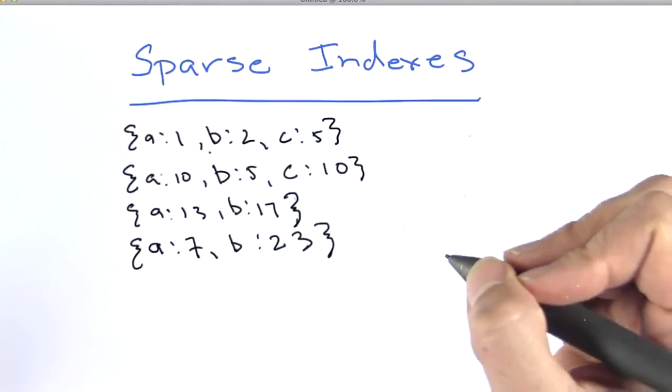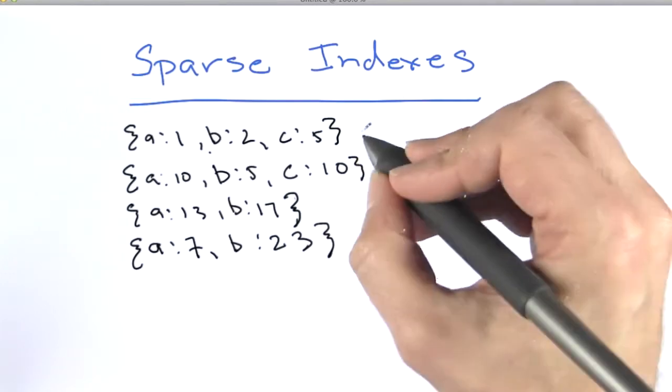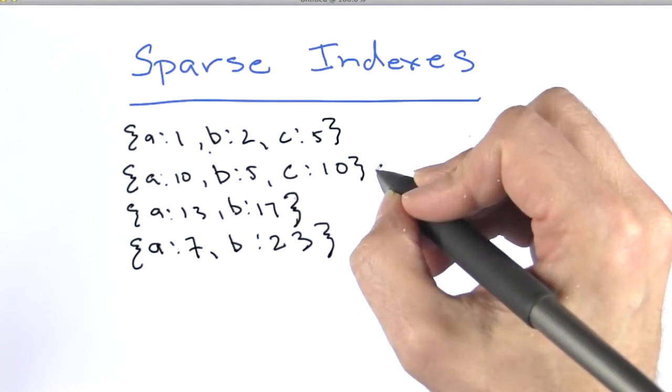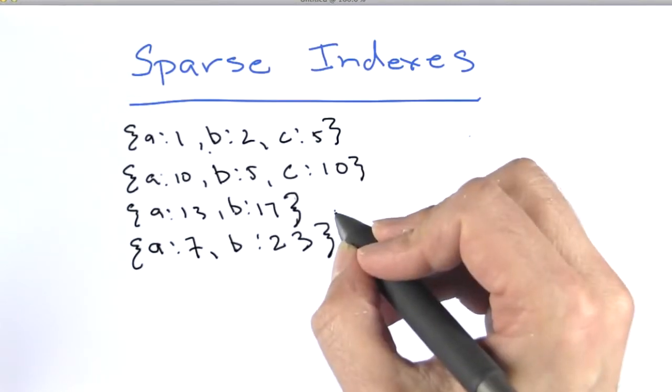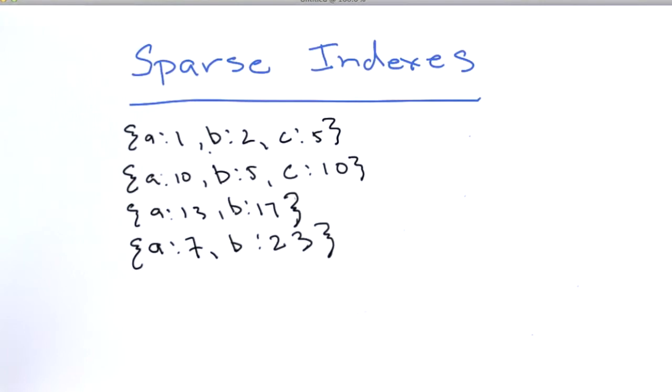Let's look at these four documents. The first one has the keys A, B, and C. The second one has A, B, and C. The third has just A and B, and the fourth has just A and B.